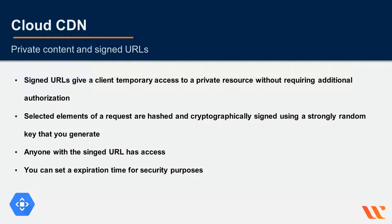Cloud CDN signed URLs enable you to serve responses from Google Cloud Platform's globally distributed caches even when you need requests to be authorized. Signed URLs give a client temporary access to a private resource without requiring additional authorization. Selected elements of a request are hashed and cryptographically signed using a strongly random key that you generate. Note that anyone with the URL can access the resource once authorized, so you should set an expiration time for security purposes.